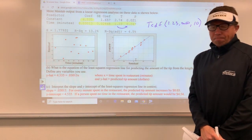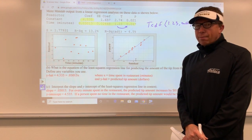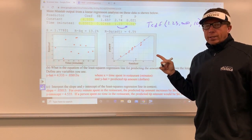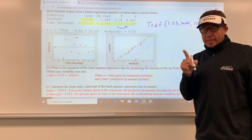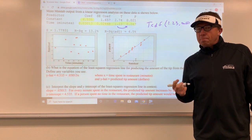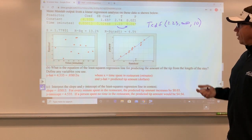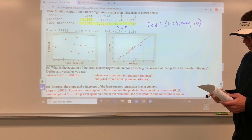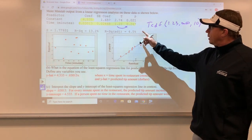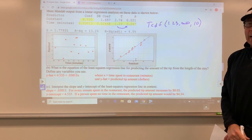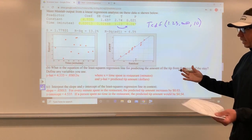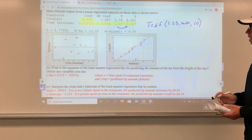This is TCDF, and this is going to be a t-score of 1.23 comma infinity, and the degrees of freedom on this is actually going to be 10. The reason it's 10 is because there are 12 points on this, and in linear regression you take 12, the n, and you subtract 2 because any 2 points make a line. 12 minus 2 is 10, so the degrees of freedom is 10. Note that this particular p-value is always for a two-sided situation.